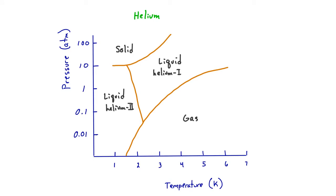If we take a look at a phase diagram for helium, you can see it looks quite different from water's. In this diagram, there are four phases: solid helium, liquid helium one, liquid helium two, and gaseous helium. These four phases exist at various combinations of temperatures and pressures, given here in Kelvin rather than degrees Celsius. Helium is a gas above about four or five Kelvin.